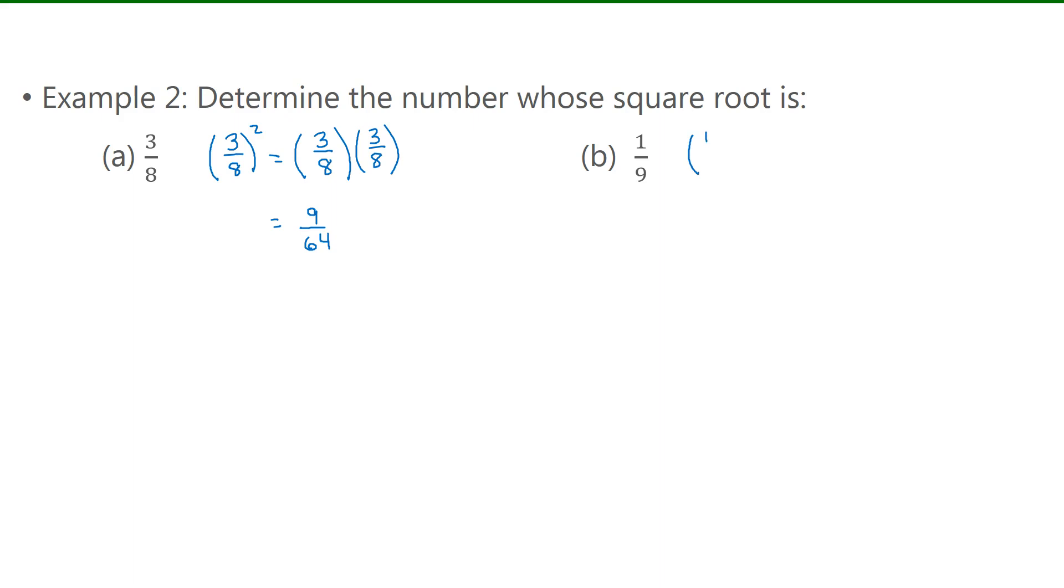It's the same thing for b. I'll square 1 over 9. I can multiply it by itself as we did in a, or you can square the numerator and square the denominator. 1 squared is 1 and 9 squared is 81.